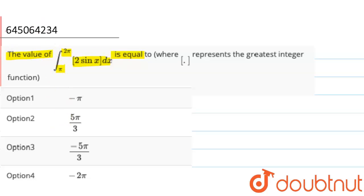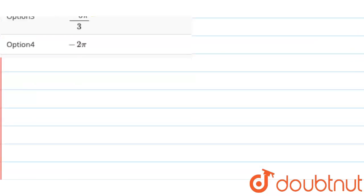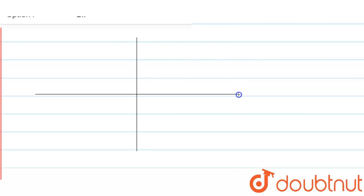We have to tell which of the following option here is correct. So let us first plot a graph for sin 2x here. So the graph for sin 2x here goes like this.